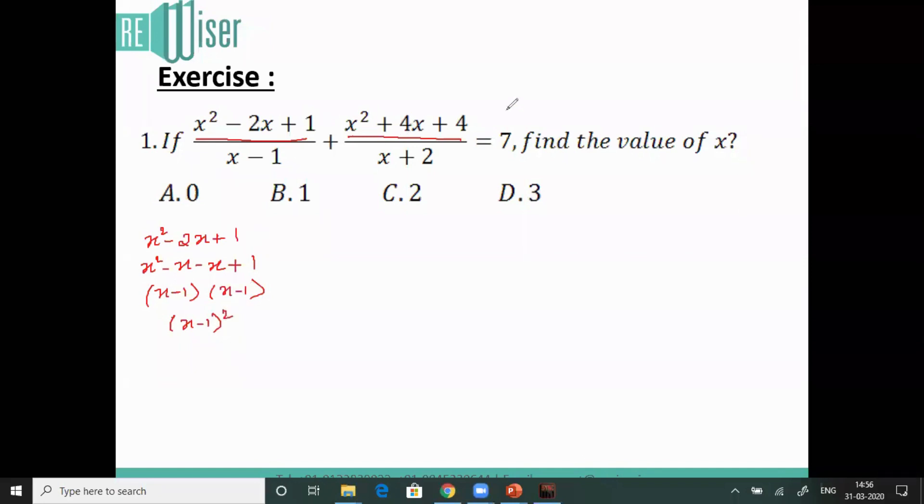Similarly, if I take this part which is x squared plus 4x plus 4, this can be split as x squared plus 2x plus 2x by middle term factorization plus 4, which is x plus 2 into x plus 2, which is x plus 2 whole square.